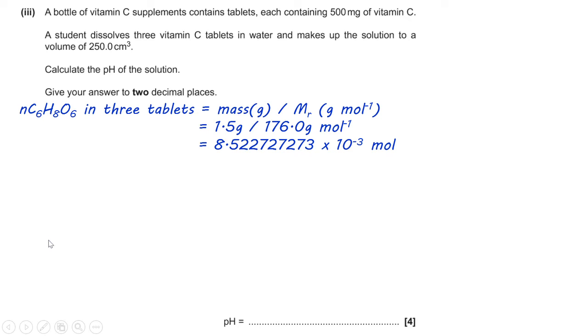So, I've changed 500 milligrams into 1500 milligrams because there's three vitamin C tablets. So, that's three times 500 making 1500 milligrams, which now becomes 1.5 grams.